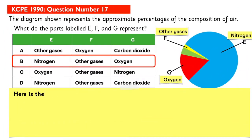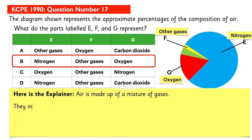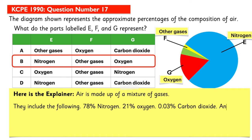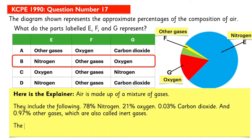Here is the explainer. Air is made up of a mixture of gases. They include the following: about 78% nitrogen, about 21% oxygen, about 0.03% carbon dioxide, and about 0.97% other gases, which are also called inert or rare gases.